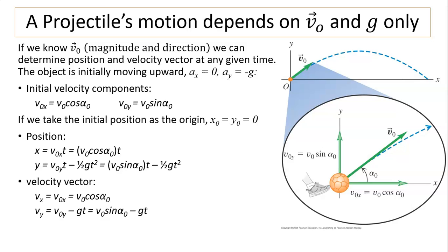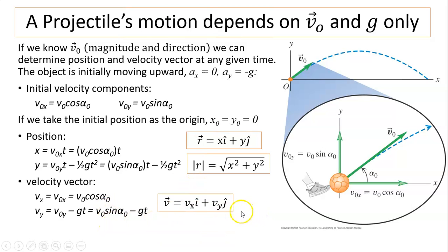So if we take the initial position as at the origin, then we can find x-y position at any time, x and y. And this is the position vector. We can find velocity at any time using the equation, kinematic equations, and we can find the velocity vector.